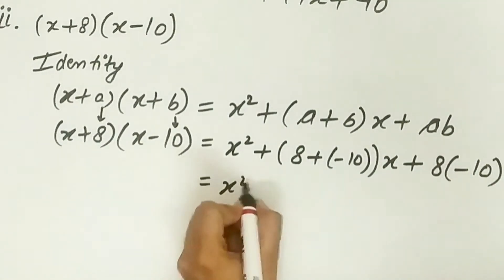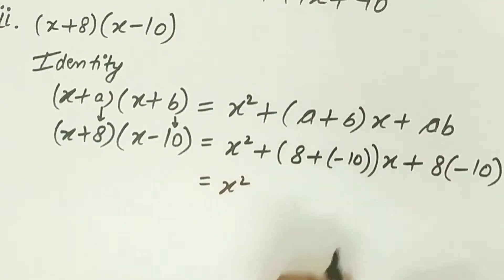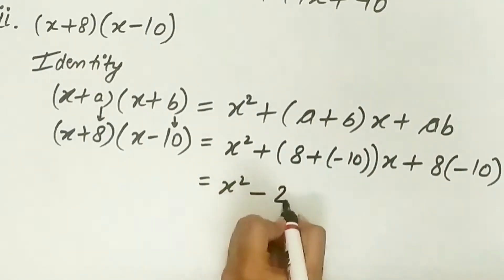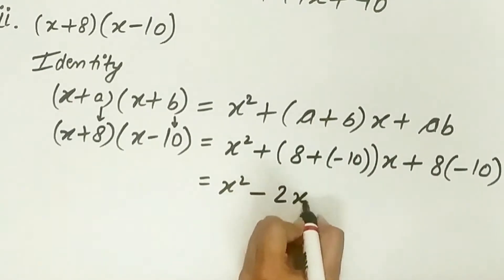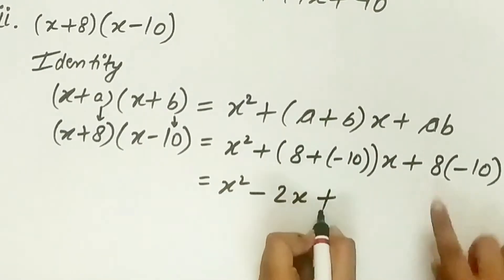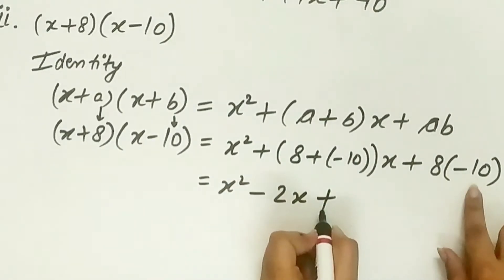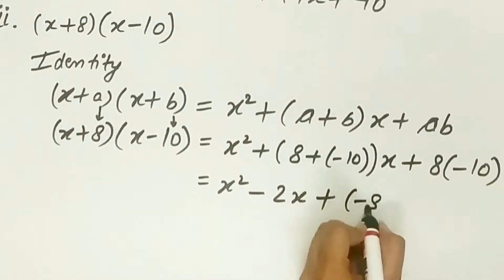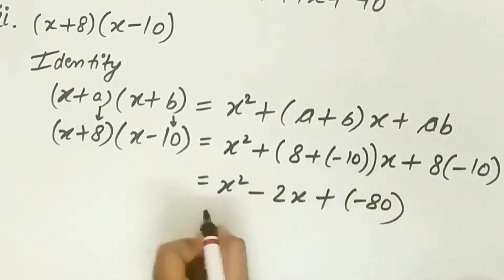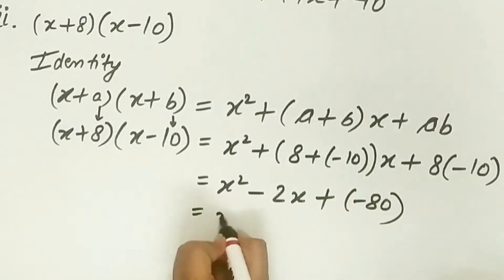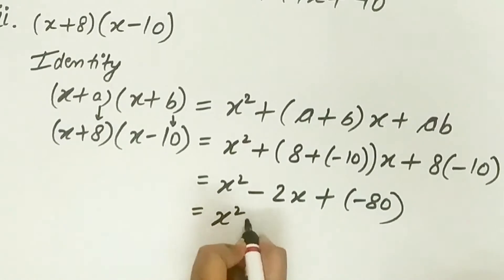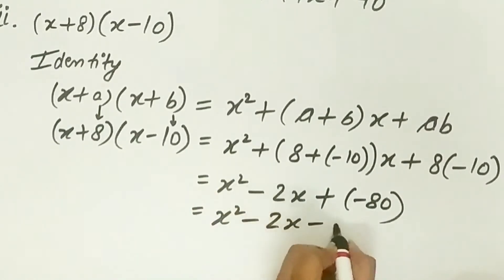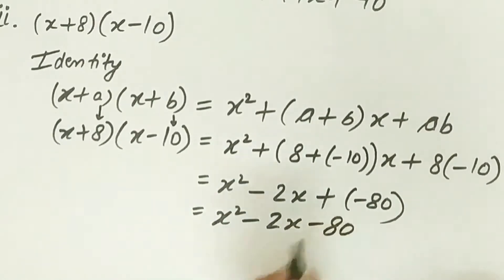8 minus 10 is minus 2x, and 8 multiply minus 10 is minus 80. So the answer is x² − 2x − 80.